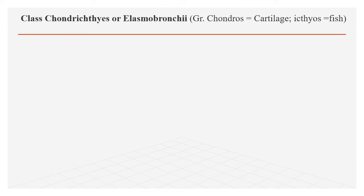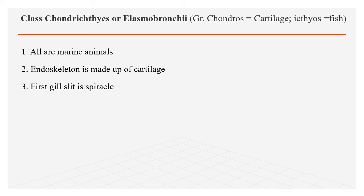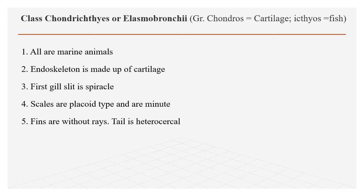The second class is Chondrichthyes, sometimes called Elasmobranchii. 'Chondro' means cartilage and 'ichtios' means fish. In these fishes, the endoskeleton is made up of cartilage. All these fishes are marine. The first gill slit is modified into a spiracle, and they have 5 to 7 pairs of gill slits.